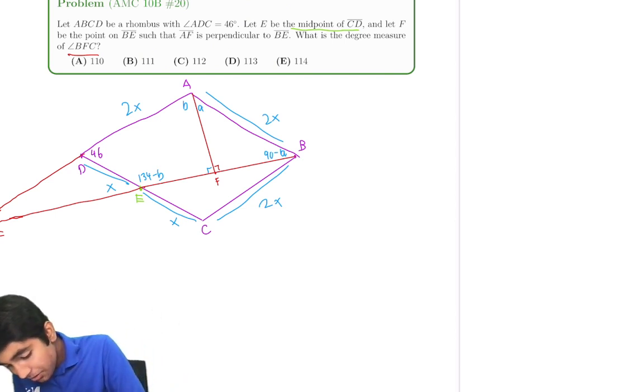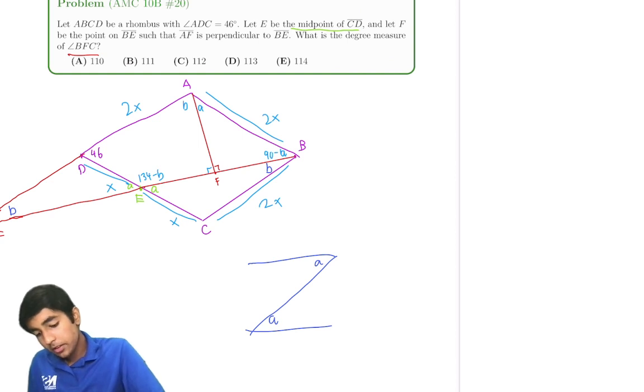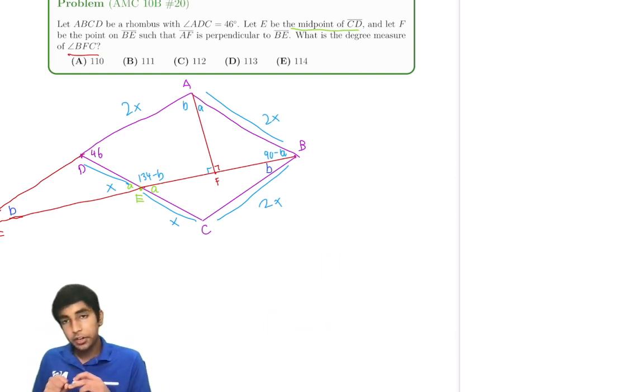Whoa, wait. So if this is A, this is A, then this is B, that's going to be B because they're alternate interior angles, right? That's the property of parallel lines. These angles are equal like that. Those two angles are going to be equal.